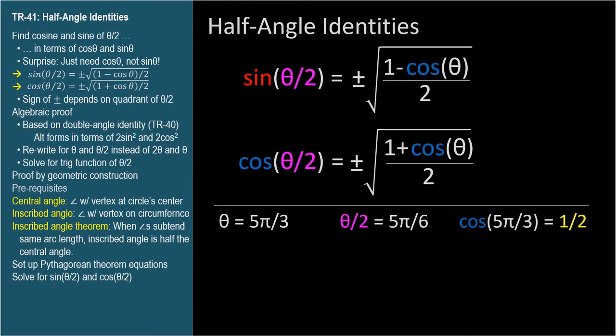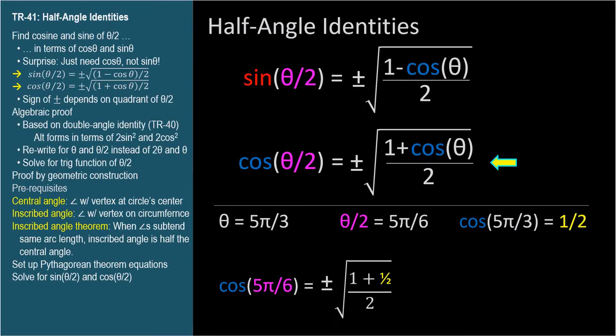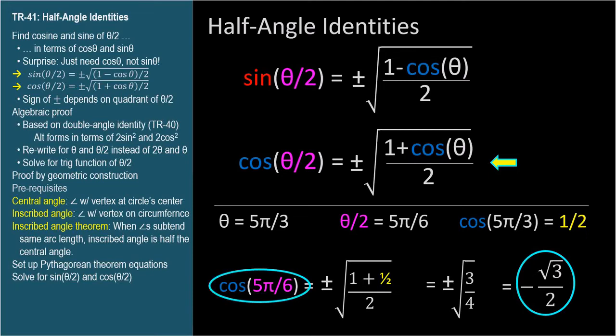Now for cosine of 5π over 3 divided by 2: that equals plus or minus the square root of 1 plus cosine 5π over 3 divided by 2. Again, cosine 5π over 3 equals 1 half. Plugging this in yields plus or minus the square root of 3 fourths, which simplifies to plus or minus square root of 3 over 2. We choose the negative alternative since 5π over 6 is in quadrant 2 where cosines are negative. So the identities work.